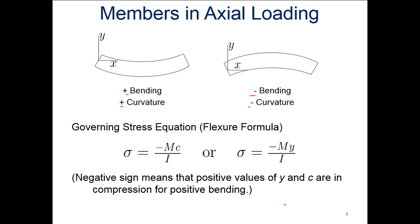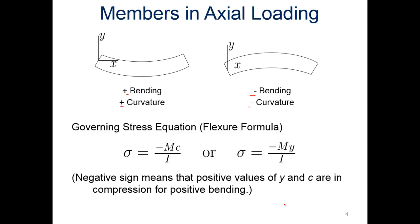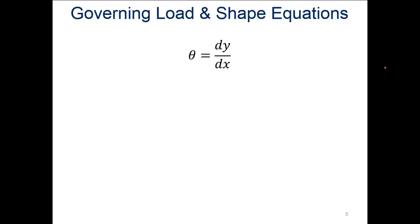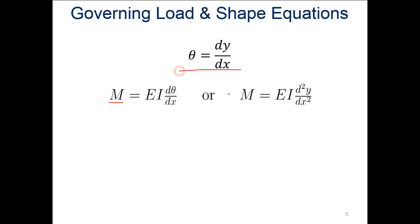All of our overall governing load and shape equations for beams: the angle dy/dx tells us how Y changes in the X direction. dy/dx equals the angle we'll see in our beam. Moments are the modulus times the moment of inertia times the differentiation of this angle with respect to X. Substituting in gives us the second derivative of Y with respect to X as the equation for moment.